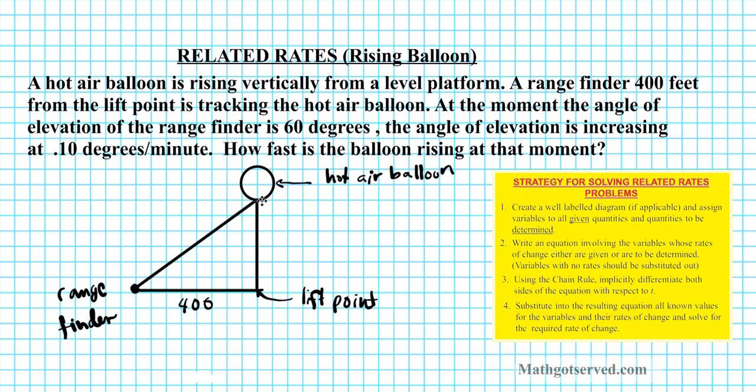So let's call the height, the vertical height, the vertical height of the balloon from the lift point. Let's call it h. And then the angle of elevation. You see this angle right here? Let's call it theta. And this is the angle of elevation. Angle of elevation. All right? And then this h right here is the height of the balloon. All right? Okay. So what rates are we given in this problem?